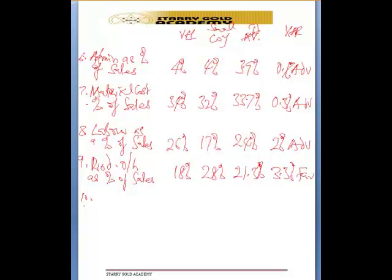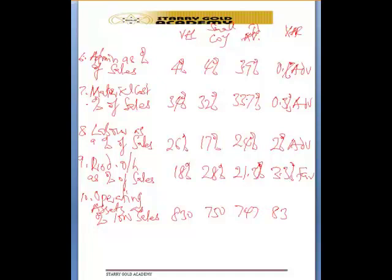For the 10th one, we have operating assets per 1,000 of sales. You have 830 here, you have 750 here, and I have 747 here. The difference is 83 — that is 830 minus 747 — a difference of 83, which is also adverse.